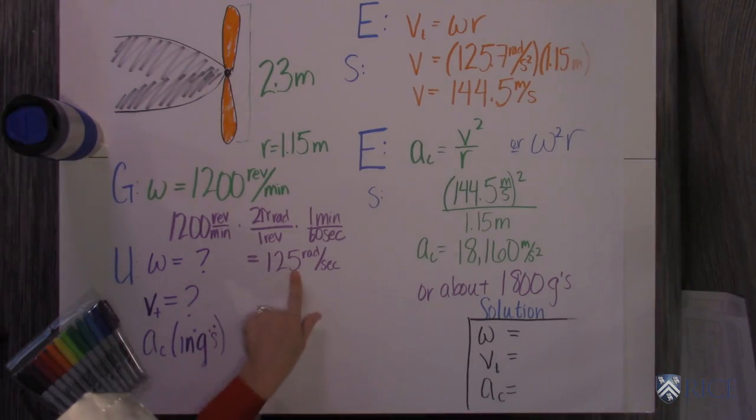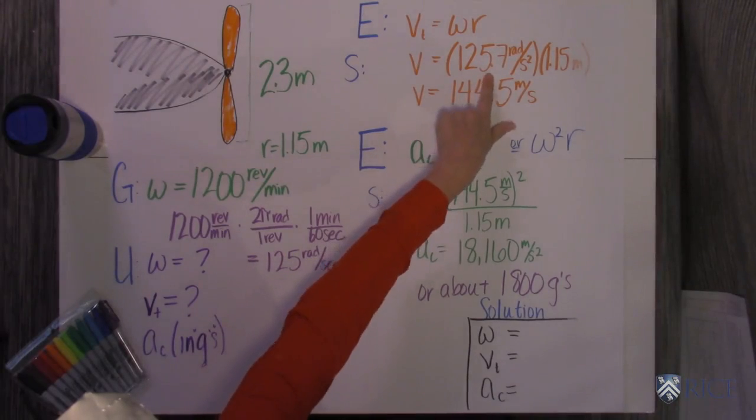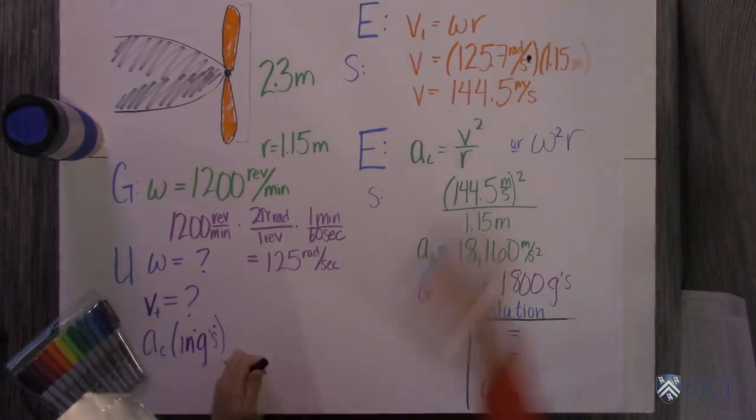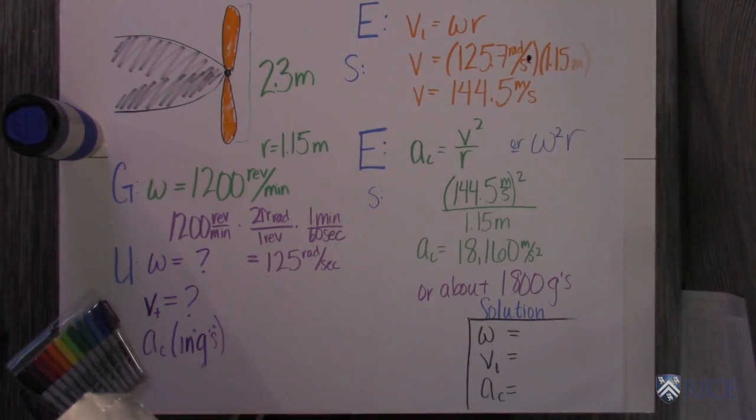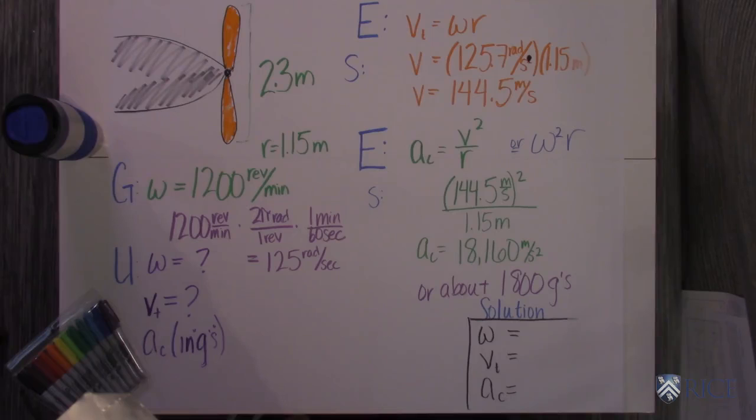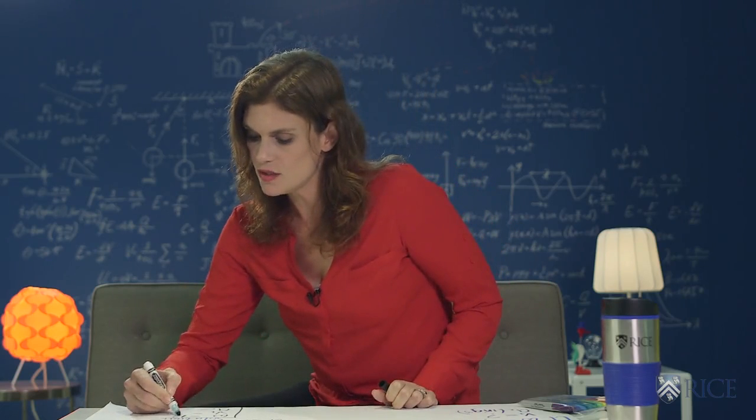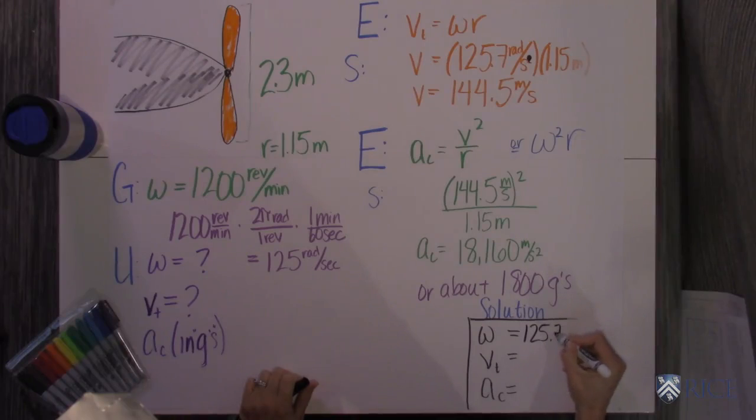So we figure out this 125 is actually 125.7 radians per second times 1.15 meters and you get that the actual tangential velocity is 144.5 meters per second. So we know this is 125.7 radians per second and this is 144.5 meters per second.